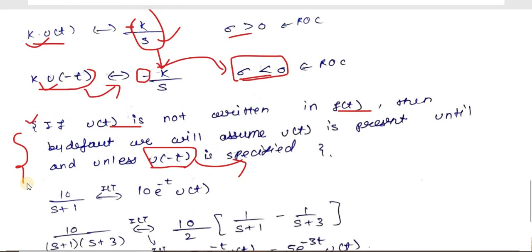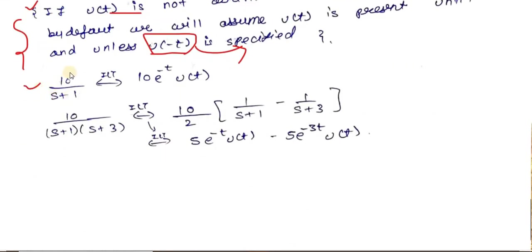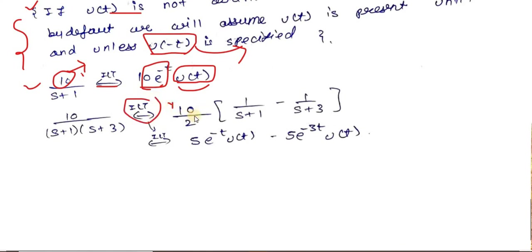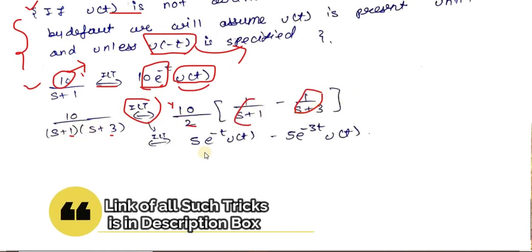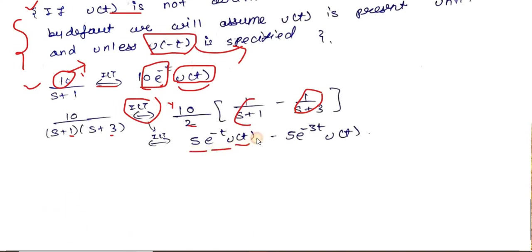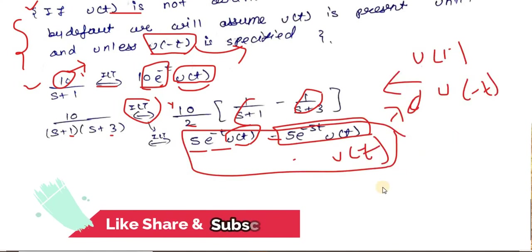For the inverse Laplace transform of 10/(s+10), the answer is 10·e^(-t)·u(t) — in transient analysis you must write u(t) explicitly. For 10/[(s+1)(s+3)], use the 1/(b−a) formula: it becomes 10/2 · [1/(s+1) − 1/(s+3)] = 5·[1/(s+1) − 1/(s+3)]. The inverse Laplace transform is 5·e^(-t)·u(t) − 5·e^(-3t)·u(t).